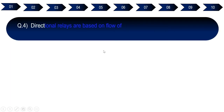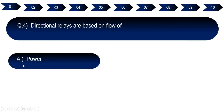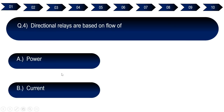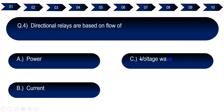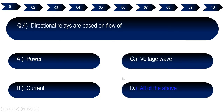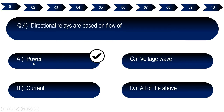Question number four: Directional relays are based on flow of. Option A: power. Option B: current. Option C: voltage wave. Option D: all of the above. The right answer for question number four is option A — power.